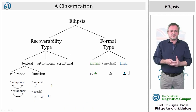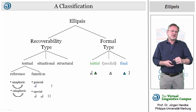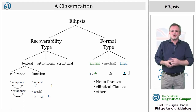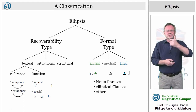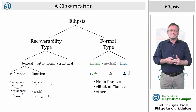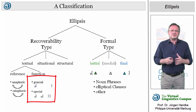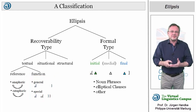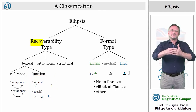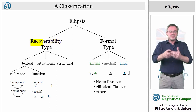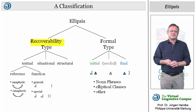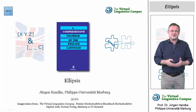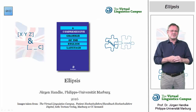Beyond the simple subdivision into formal and recoverability types, there are further issues that can be discussed in the context of ellipsis. For example, we could distinguish formal categories such as noun phrases, elliptical clauses, and other constructions. We could discuss the relevance of the functional relation between the elliptical and antecedent construction. Or we could define even degrees of ellipsis — for example, on the basis of the precision with which we can recover the missing elements. However, I will stop here and postpone these details about ellipsis to further practical videos where you can apply and test your knowledge.